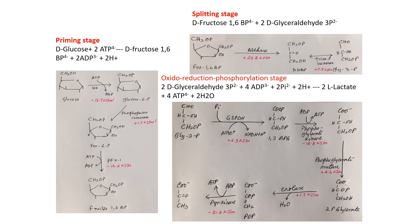Glycolysis has three stages. The first is the priming stage, where two priming reactions occur, trapping the molecule inside and making it a relatively energy-rich molecule. The second is the splitting stage, where the six-carbon compound is converted into two three-carbon compounds. The third is the oxidoreduction and phosphorylation stage, where low phosphate transfer potential molecules are converted into high phosphate transfer potential molecules, and energy is harvested in the form of ATP.